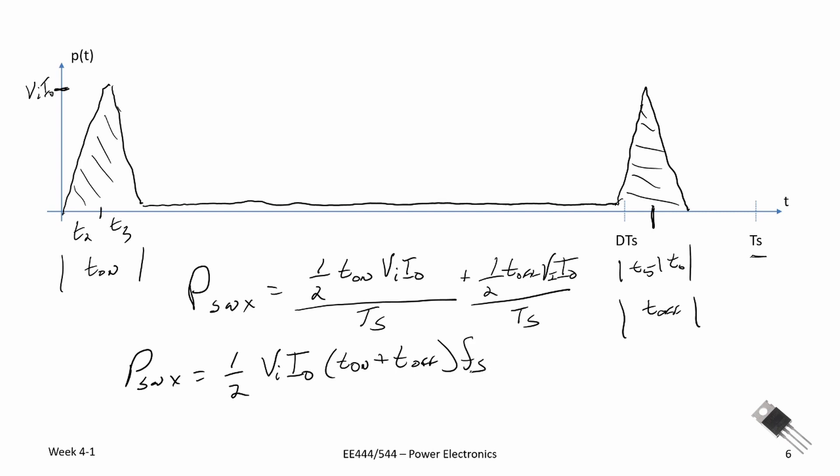I wrote our switching period in a reciprocal form using the switching frequency F instead of capital T sub S. And as you can see, if we increase our switching frequency, we will increase our switching loss.